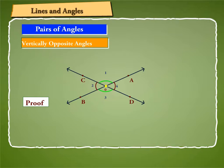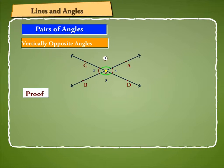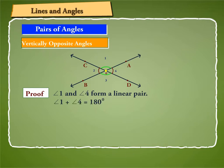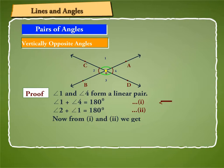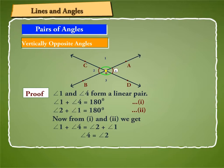We can prove this fact as follows. In the figure, angle 1 and angle 4 form a linear pair. Therefore, angle 1 plus angle 4 is equal to 180 degrees. Similarly, angle 2 and angle 1 form a linear pair, so angle 2 plus angle 1 is equal to 180 degrees. From these two equations, angle 1 plus angle 4 is equal to angle 2 plus angle 1, hence angle 4 is equal to angle 2. Similarly, we can show that angle 1 is equal to angle 3.